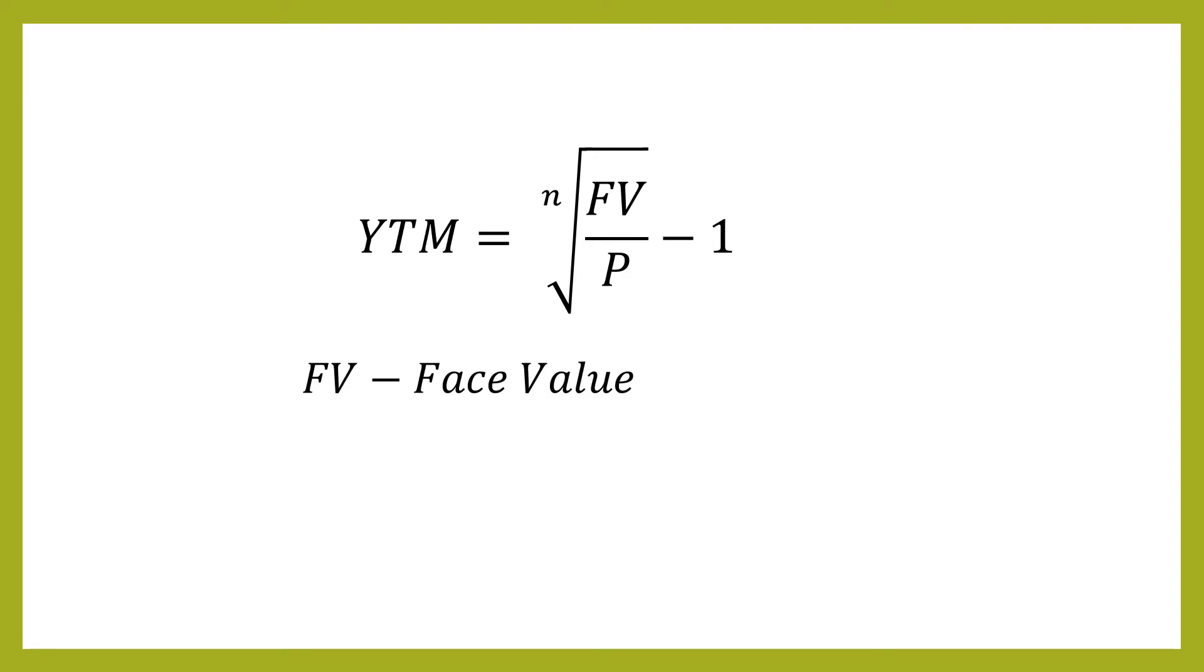So to recap, we've got FV for the face value. FV is one variable, not F times V. FV stands for the face value. Then we've got P for price.